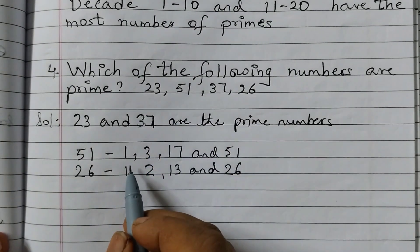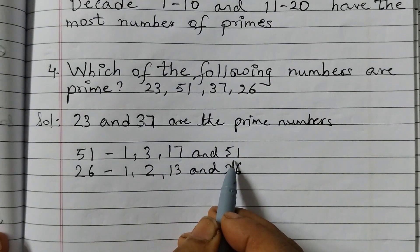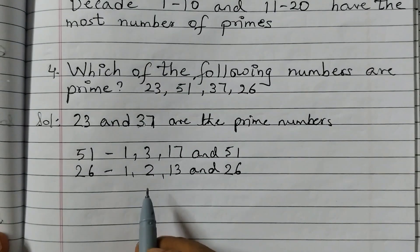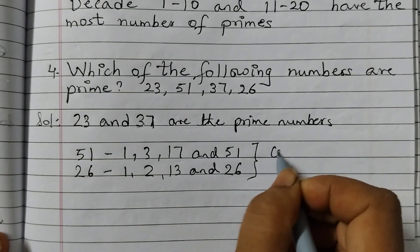The factors of 51 are 1, 3, 17 and 51, so more than 2 factors, that is a composite number. 26's factors are 1, 2, 13 and 26, so these are composite numbers.